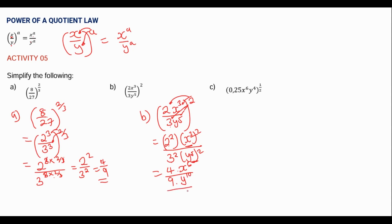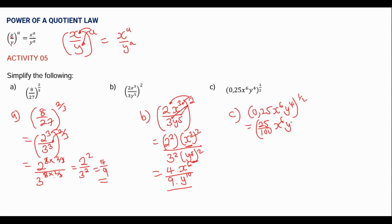For part c, we have 0.25x to the power 6, y to the power 4, all to the power 1/2. We can start by simplifying what is inside the bracket. We write 0.25 as a fraction: 25 over 100, which reduces to 1 over 4. So we have 1/4 times x to the power 6 times y to the power 4, all to the power 1/2.